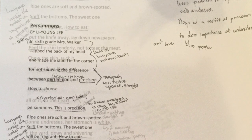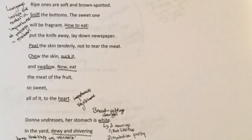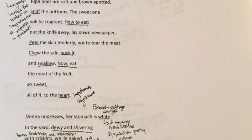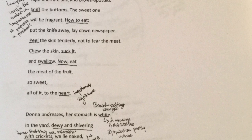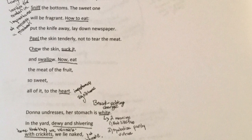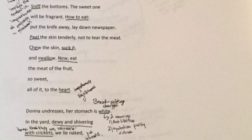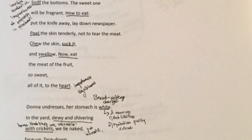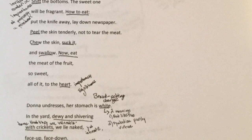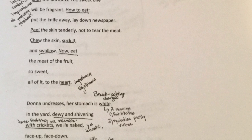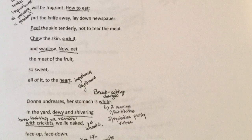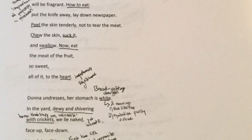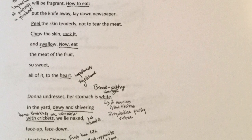Moving through the rest of this stanza, the language is particularly important because it invites the reader and shows that preparing a persimmon is not an easy process — it's multi-step. Language such as "sniff," "how to eat," "peel," "chew," "suck," "swallow," "now eat" gives instructions to the reader about the tenuous process of eating and preparing a persimmon. And then saying "so sweet, all of it, to the heart" — the importance of "heart" as a symbol shows its significance.